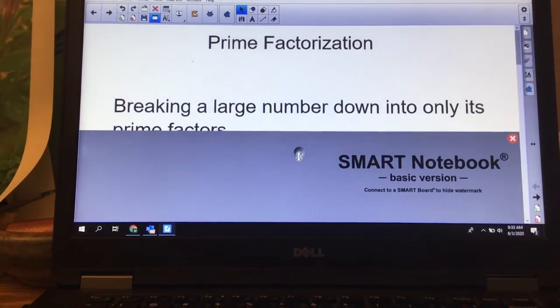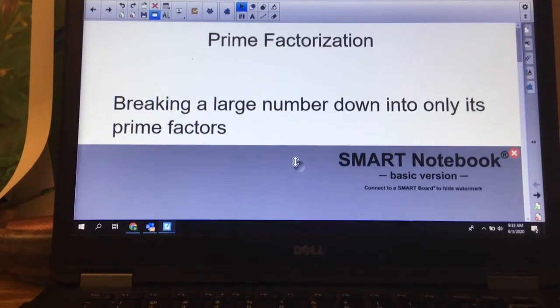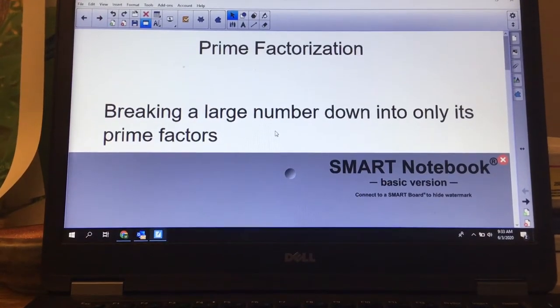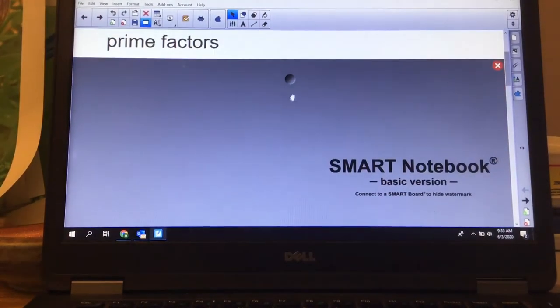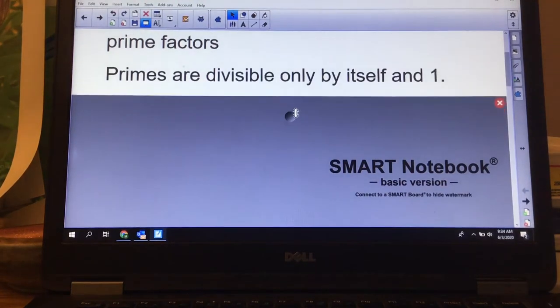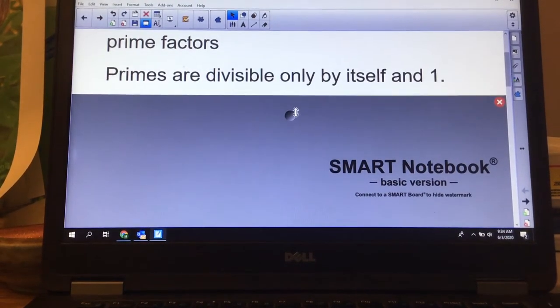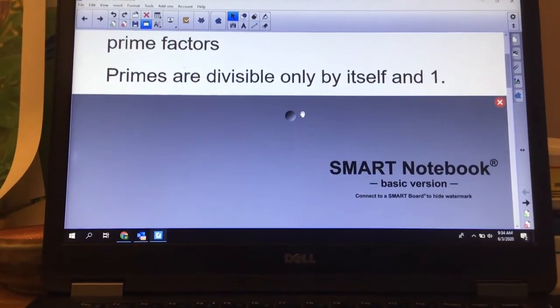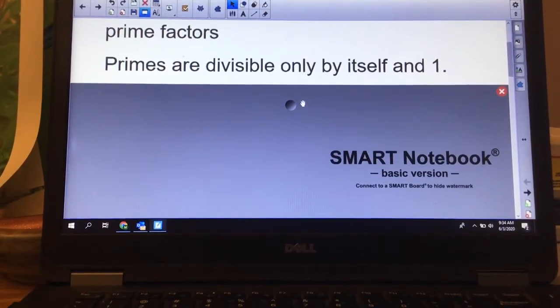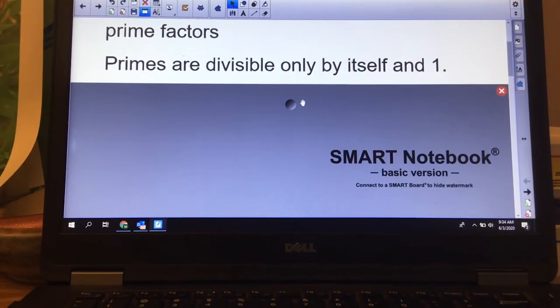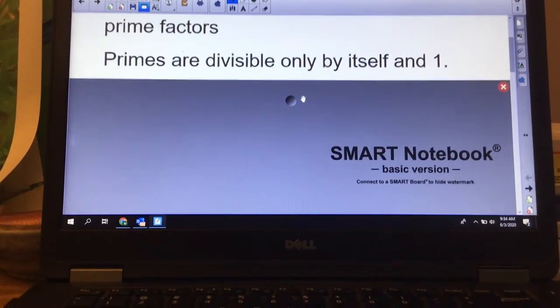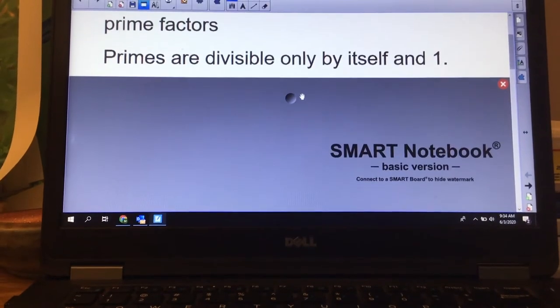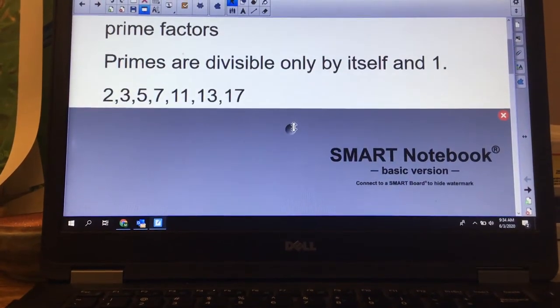Just remember, prime factorization is breaking a large number down into its prime factors. Primes are only divisible by one and itself. So if we think of the number 100, we know that 50 is a factor, but when we do prime factorization we don't worry about things like 50. We only worry about primes.